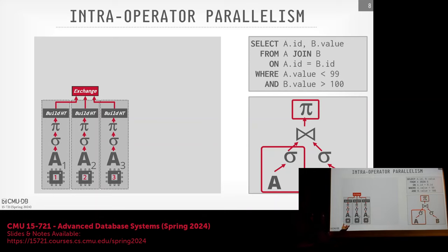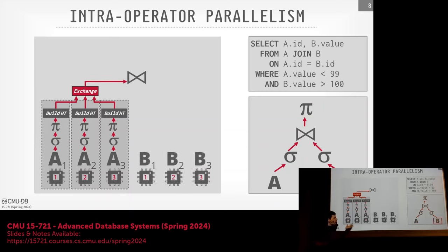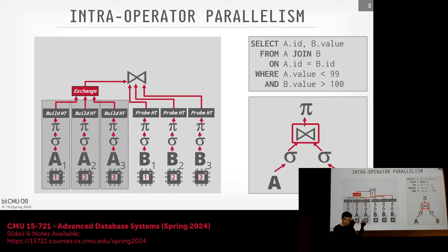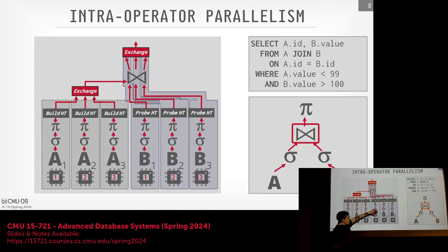Once we have the build side done, we go to the other side of the query plan tree. Say we have three files for B — three operator instances scan B, do the filter, do the projection, and then probe the hash table and produce output. Assuming a single hash table, each individual pipeline can probe the hash table separately, so you have three threads or workers producing outputs from this join. We need another exchange operator to take their individual results, combine them, and produce the final output to the user. The pipeline boundary for each operator instance looks like this.